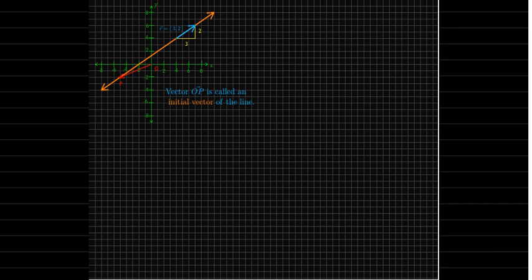For example, 4 comma 4 as my point to obtain the initial vector. But I chose the given point P.